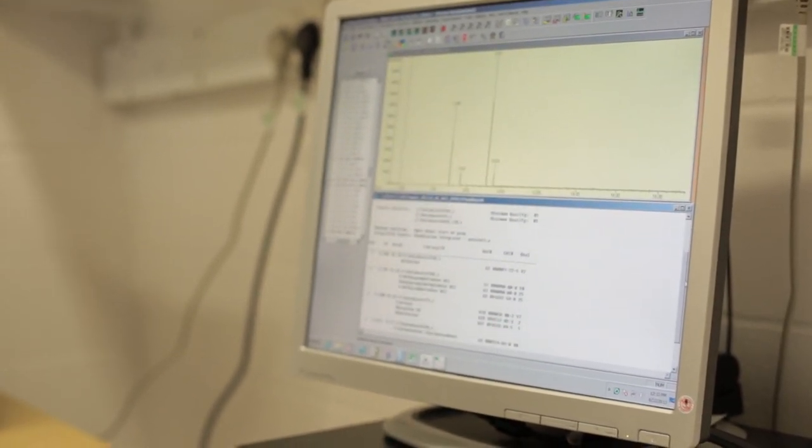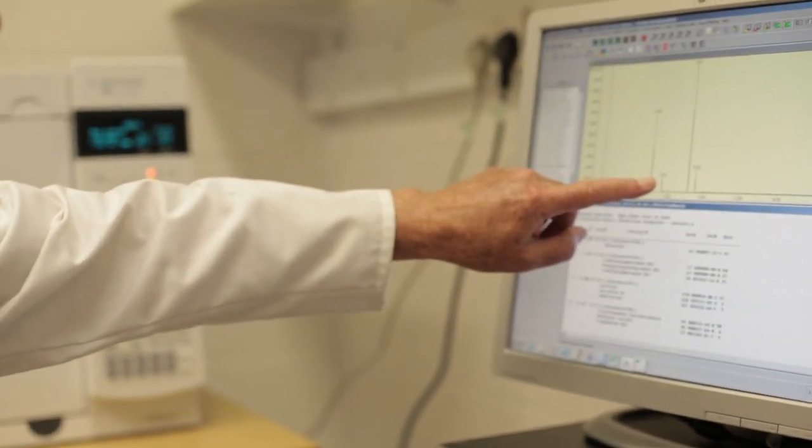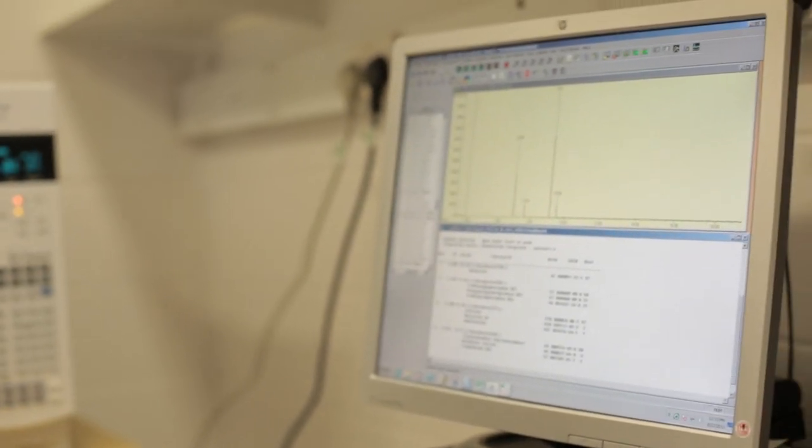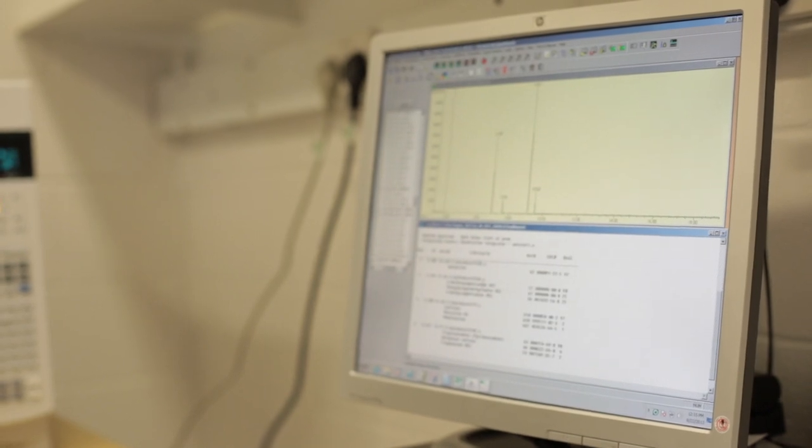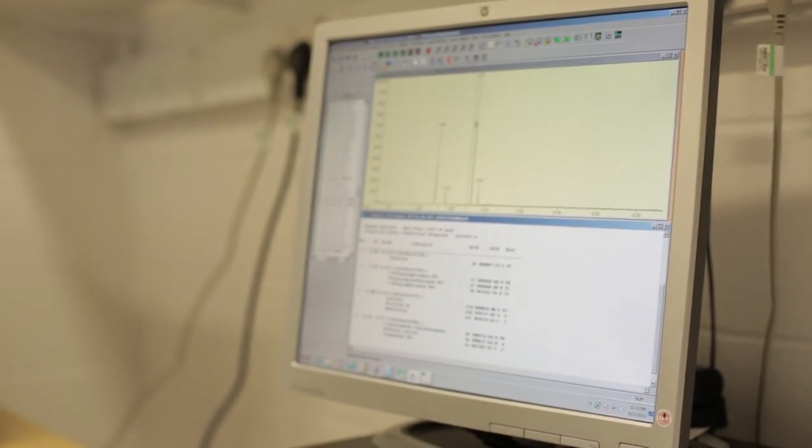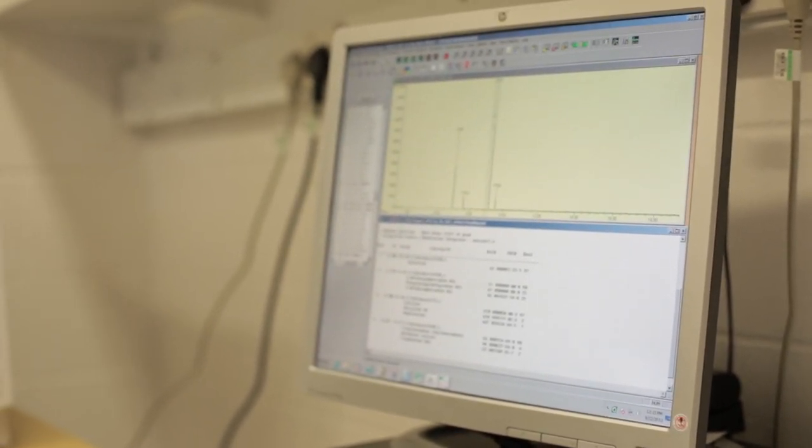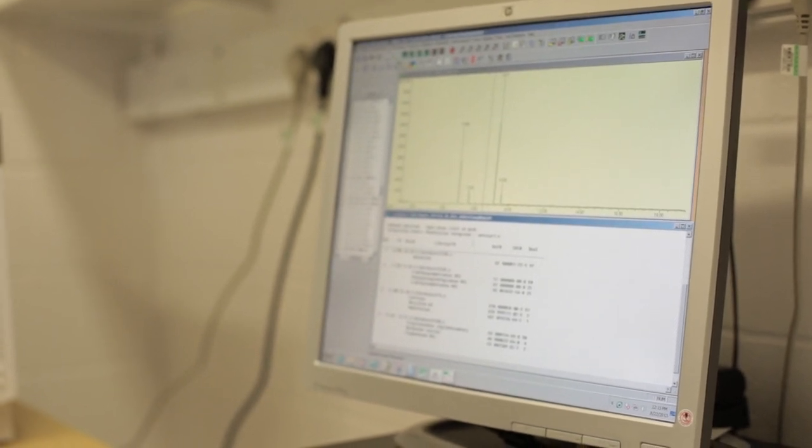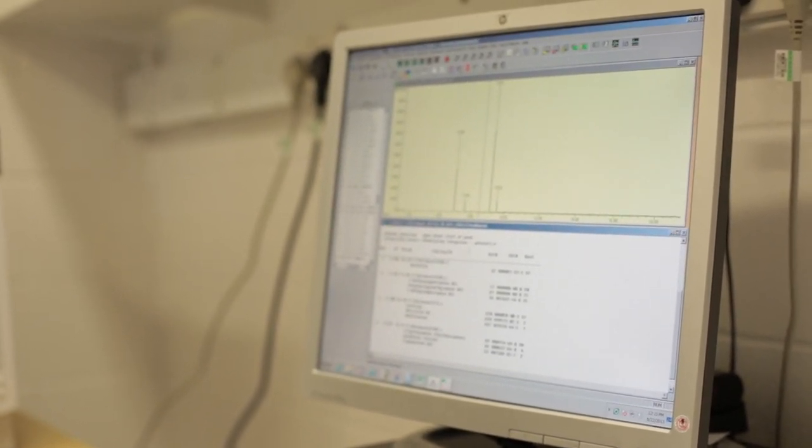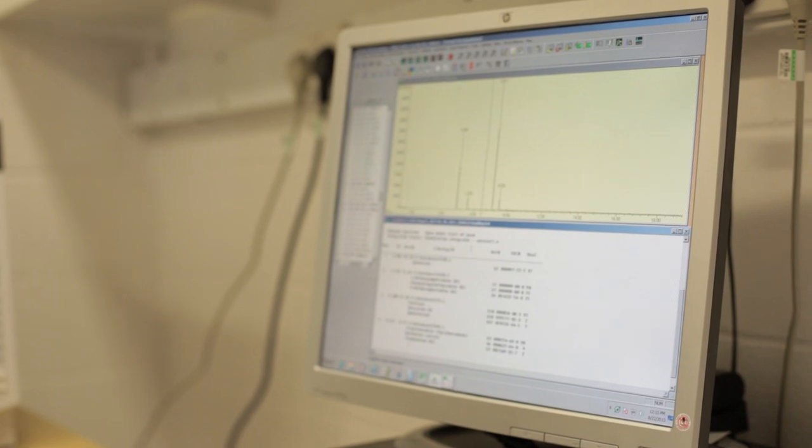And when we do that, it shows us that the first peak, this one here, is 4-methoxyamphetamine, PMA. And the second peak at 9.111 is caffeine. So we've shown that this green tablet contains a mixture of PMA and caffeine.